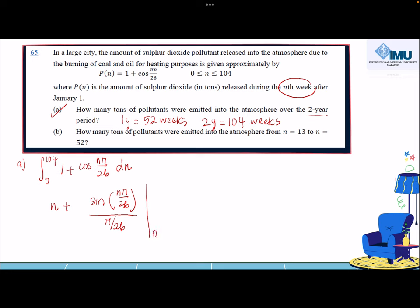From where to where? From 0 to 104. Now let's rewrite it in a simpler way. So I have n plus - now 1 over π/26 can be written as 26/π - times sin(nπ/26).